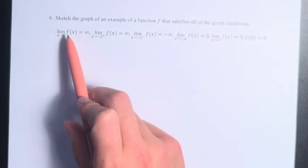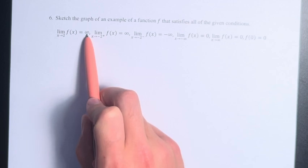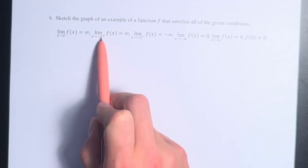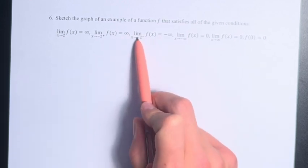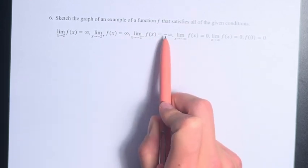We have the limit as x approaches 2 of f(x) equals infinity. The limit as x approaches negative 2 from the right of f(x) equals infinity. The limit as x approaches negative 2 from the left of f(x) equals negative infinity.